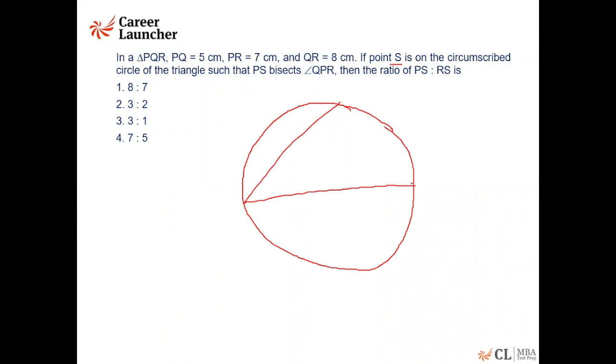Let me take the points PQR here. This is P, Q, and R, and we have this as an angular bisector. So this is S because it bisects the angle QPR. So let me take this angle as X. This would be X. This angle is Y. This angle will also be Y because these are the angles in the same segment, and this is Z. This will also be Z.